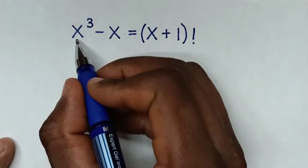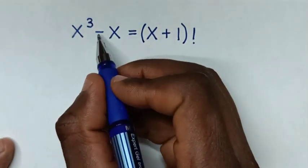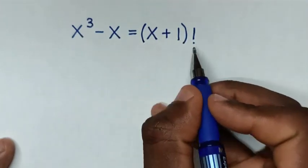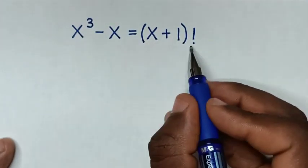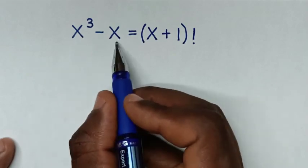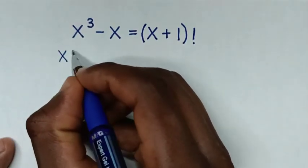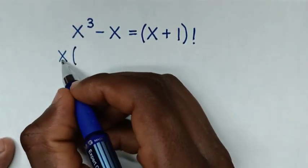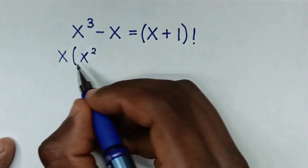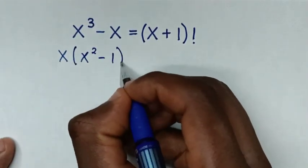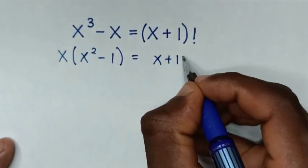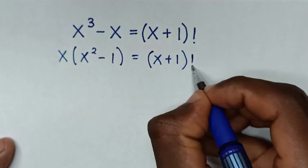Hello. How to solve x³ minus x equals (x+1) factorial — to find the value of x from this equation. From this side, x is common, so we take x out of the bracket: x³ divided by x is x², and negative x divided by x is negative 1, giving us x times (x² minus 1) equals (x+1) factorial.